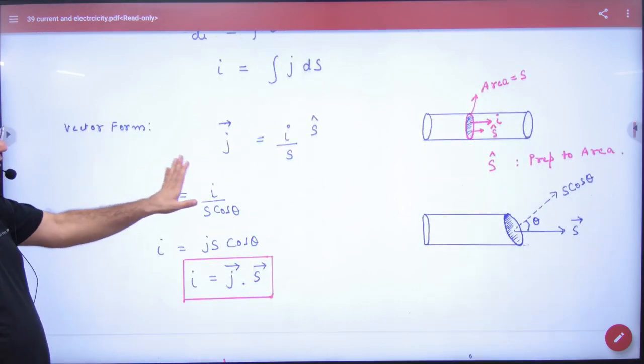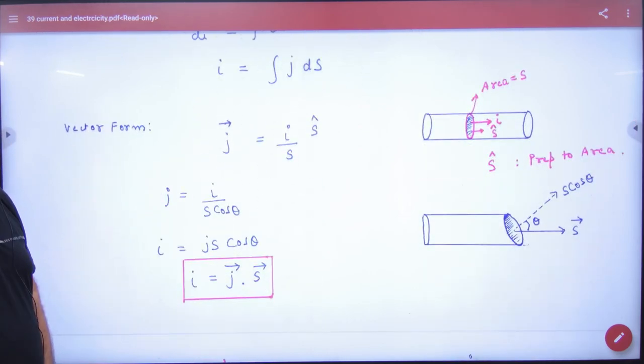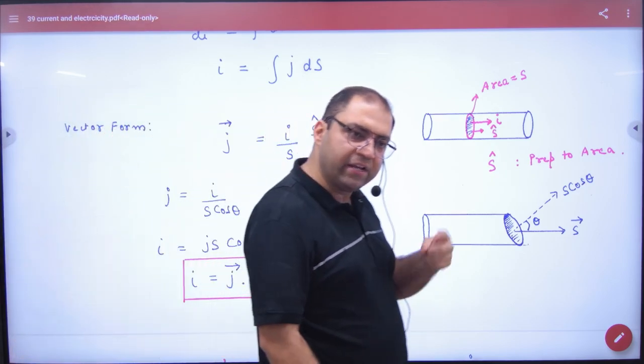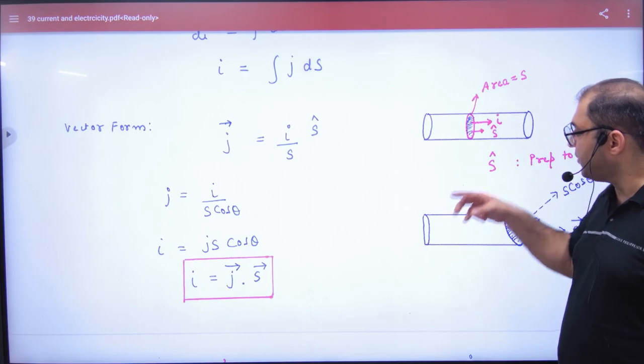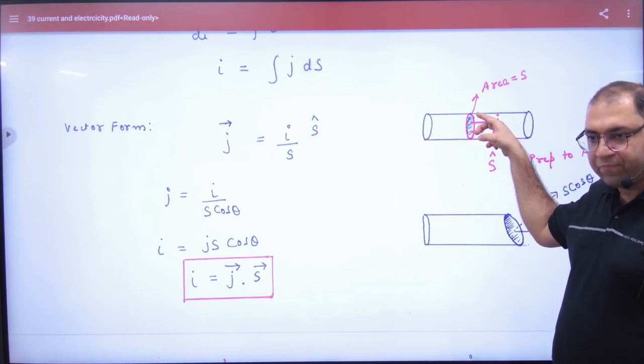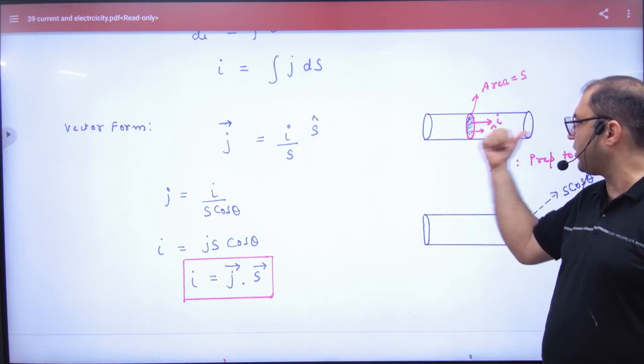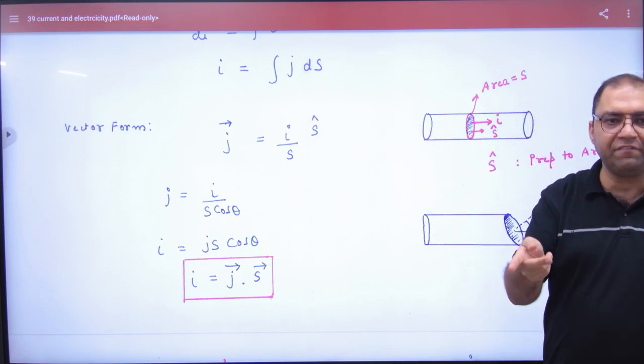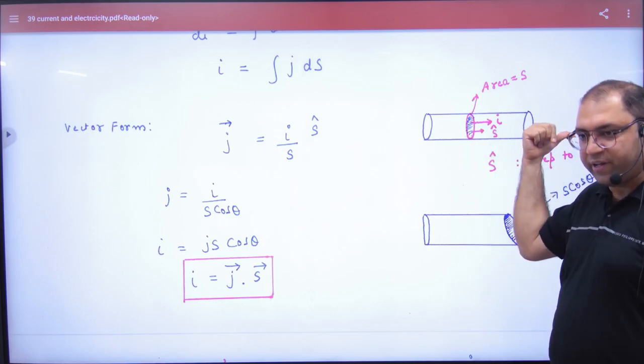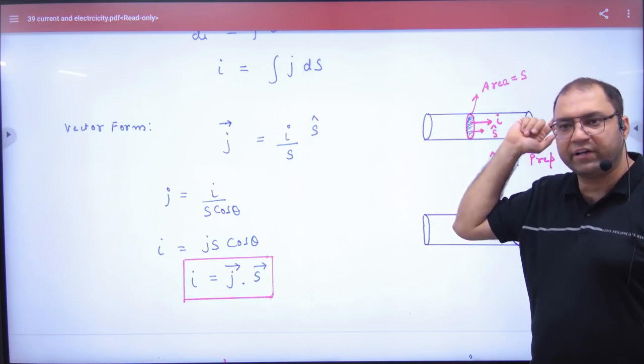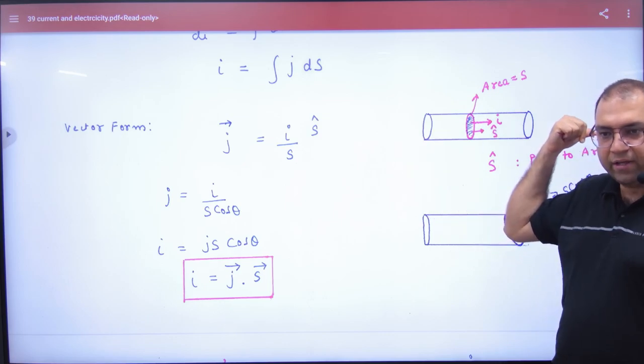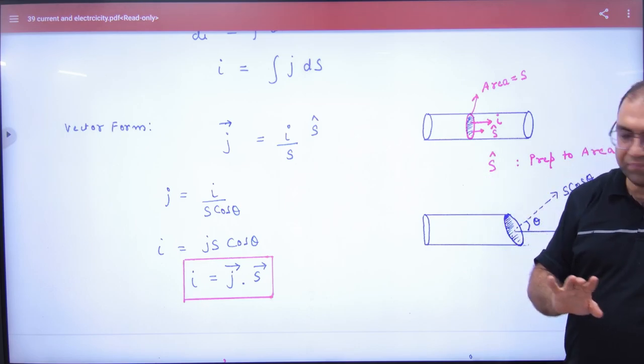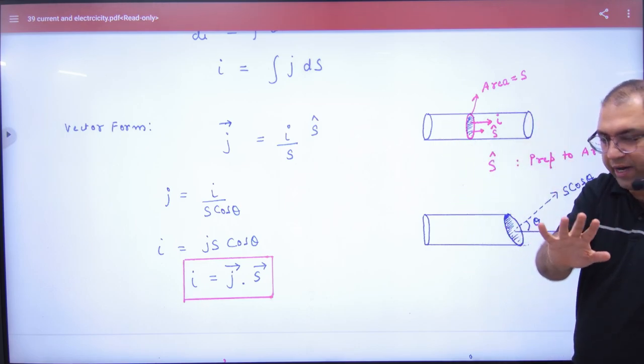Ab yaad rakhna, current density ek vector quantity hai. To j vector, current density hota hai current by area. Iska direction area vector ke along hota hai. Jaise agar maan lo ye cross section area hai, iska area vector iske perpendicular hai - ya to right hai ya left hai. Hum kaise decide karte hai right ya left? Current ki direction se. Agar current right hai to area vector bhi right hai. Agar left hai to area vector bhi left hai. To current density is a vector. Current is a scalar. Current ki koi direction nahi.